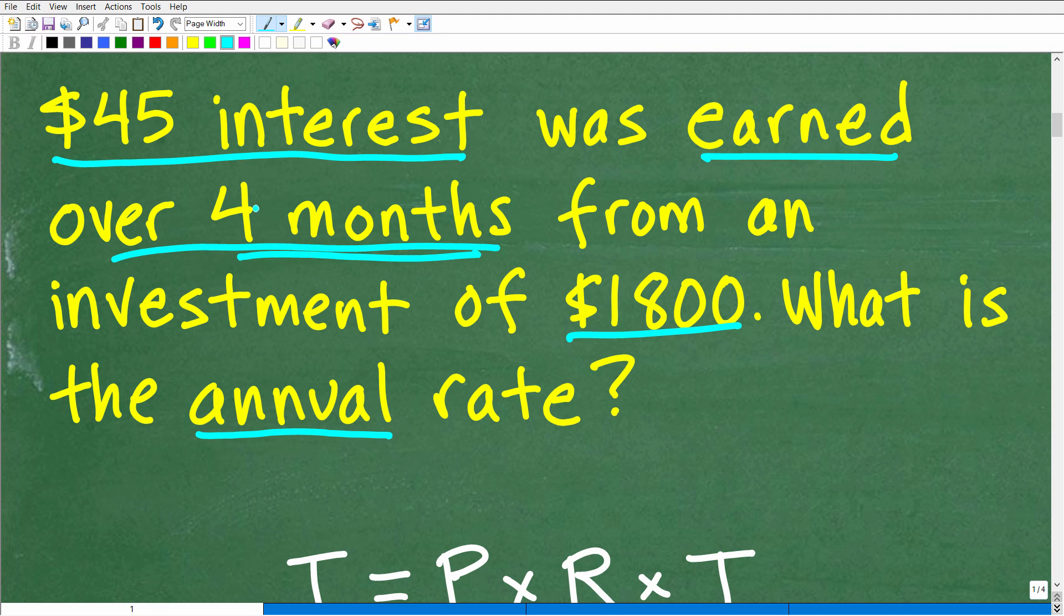So if we made $45 in four months, how much are we going to make in one year? Well, if you're thinking, should I just multiply four times three to get to 12 months, you're thinking right. So I took that 45 and multiplied by three, I would get the annual amount of interest that was earned. So this problem is trying to be a little bit tricky, but I'm kind of walking through the solution here, step-by-step.